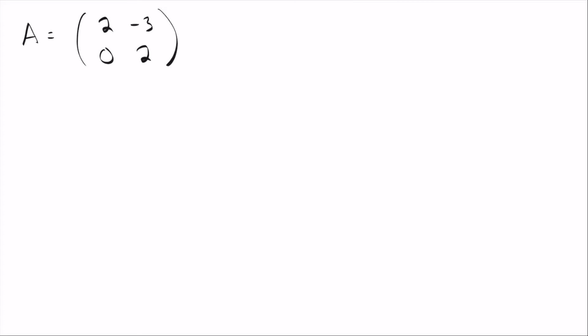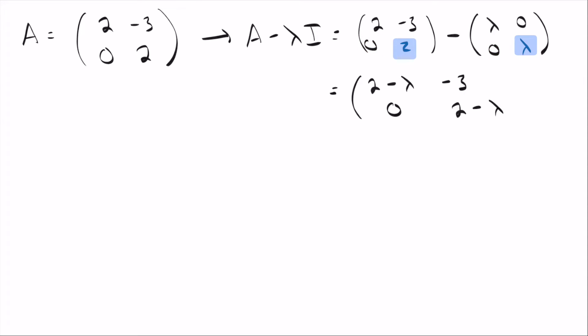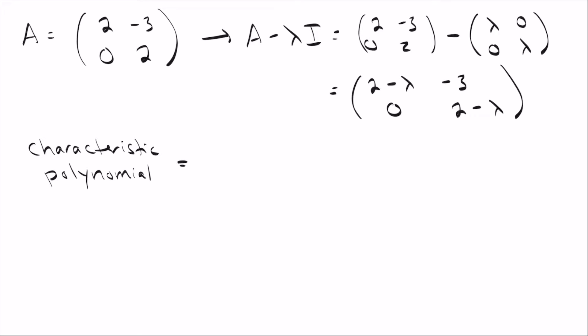This next example may not seem very different — there's a 0, but it's actually easier, and it introduces a term you often hear in class. We go ahead and take A minus lambda I: take the original matrix and subtract lambda times the identity. We get 2 minus lambda, negative 3, 0, and 2 minus lambda.